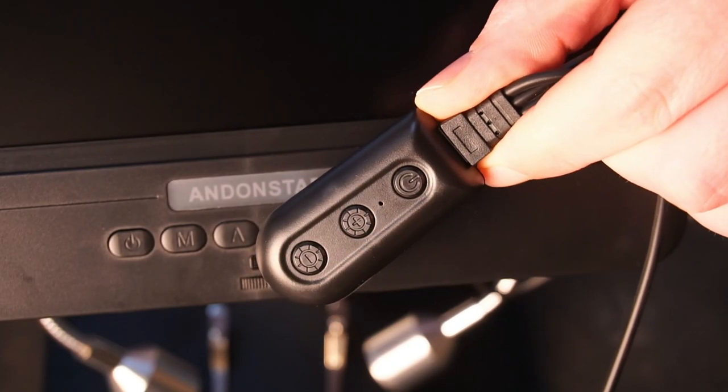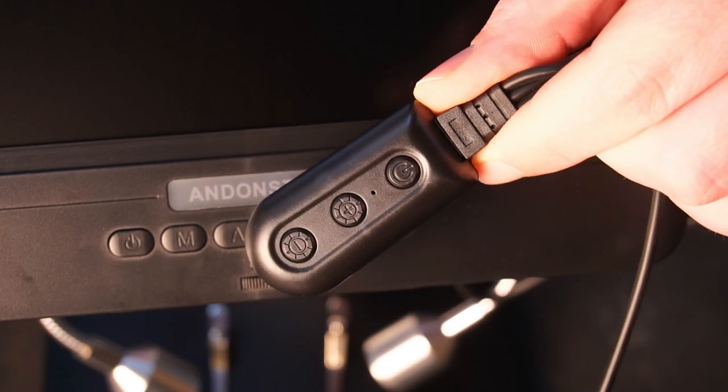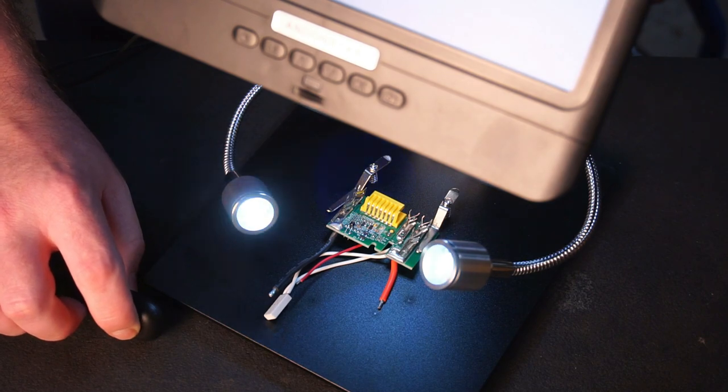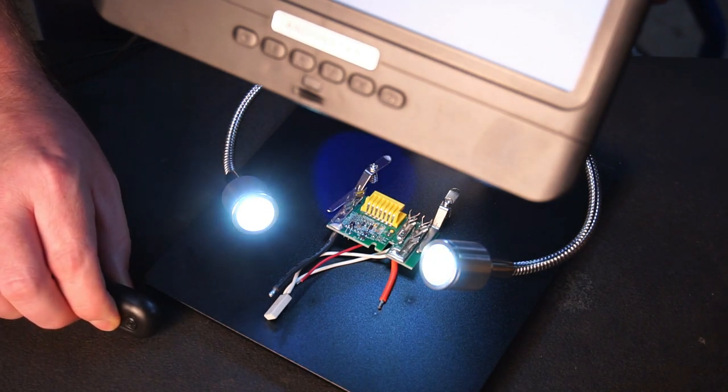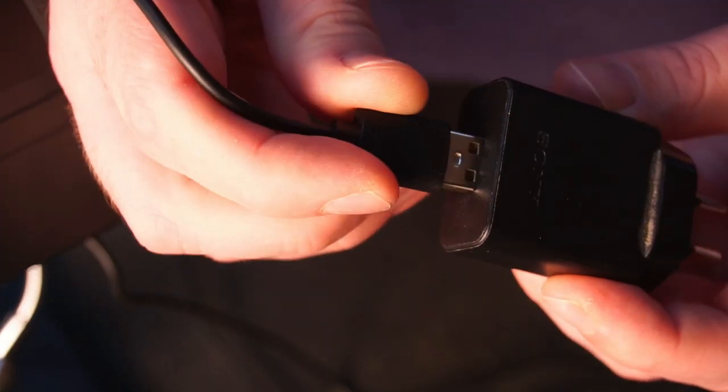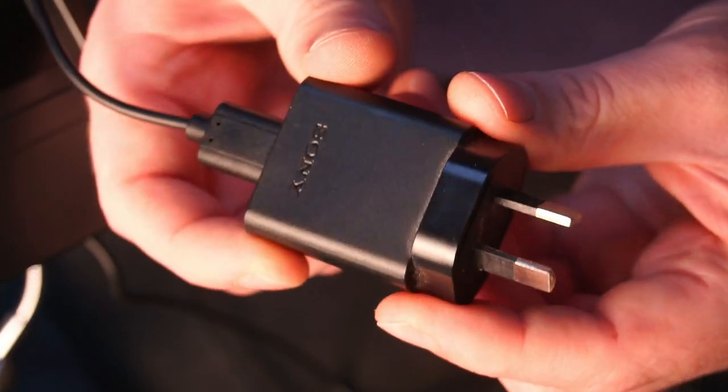Meanwhile the inline remote also has a power button, along with a plus and minus button to control the separate flexible LED lights on the base plate. The scope is powered by a USB adapter that should be capable of supplying at least 2 amps.